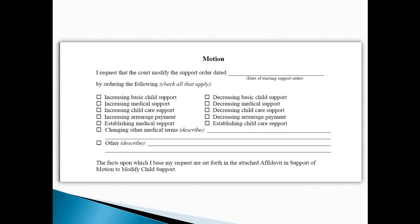A motion is the legal way for you to tell the judge what you want to change in a court order. You must first tell the judge what court order you want to change — look at the date of the existing order and write that in your form. There are many different options commonly requested in a motion to modify child support. Carefully review the options and check the box next to what you are asking the court to do. Remember, the child support magistrate can only hear issues related to child support. Other family law-related issues, such as custody and parenting time, cannot be heard by the child support magistrate. You can choose to increase or decrease child support, child care, arrear payments, or have medical support issues addressed.